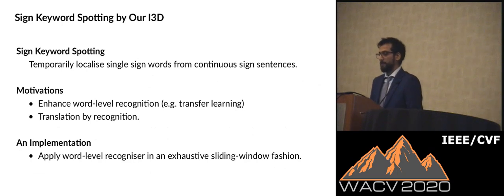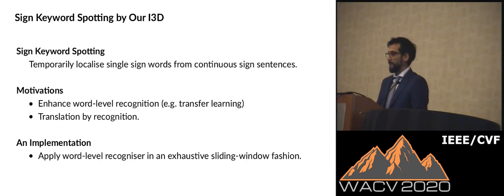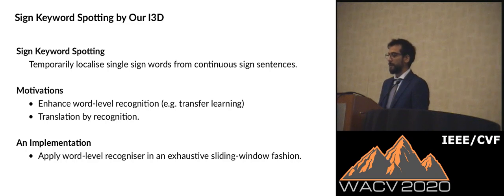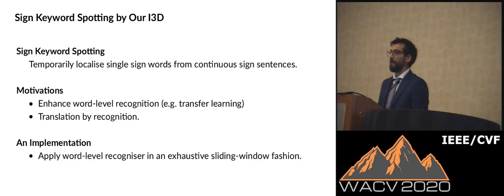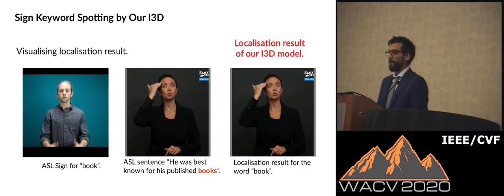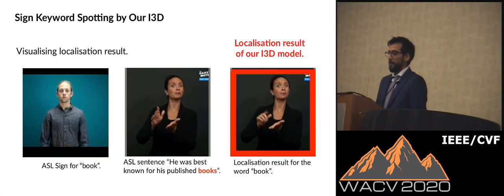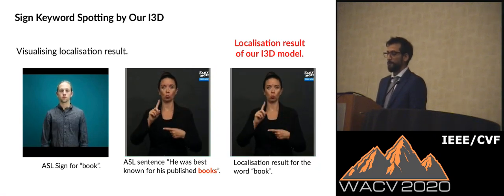Sign word recognition can also serve as a foundation for further sign language applications. Here we demonstrate the effectiveness of our word recognizer by applying it on the task of sign keyword spotting. In this task, a model is asked to temporally localize signed words from continuous sentences. In this way, we can automatically extract word-level samples to increase the performance of word recognizers and help translation. To this end, we apply our word recognizer in an exhaustive sliding window fashion on the input sign sentence video. Here we provide examples of our localization results.